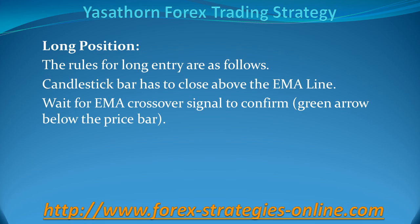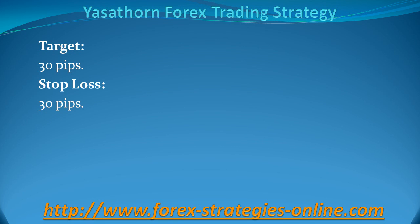Long position. The rules for long entry are as follows: the candlestick bar has to close above the EMA line, then wait for the EMA Crossover Signal to confirm — that means a green arrow below the price bar should appear. Target: 30 pips. Stop loss: 30 pips.